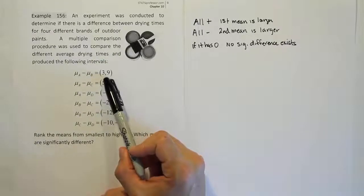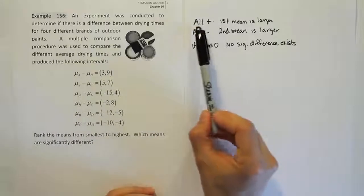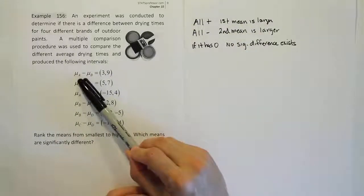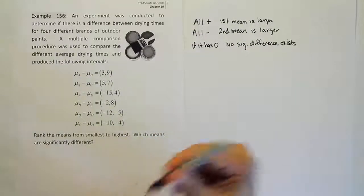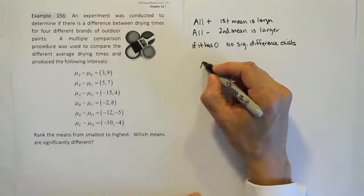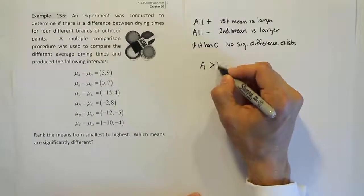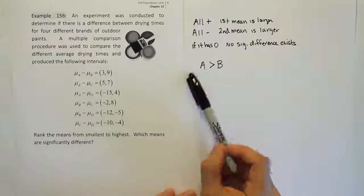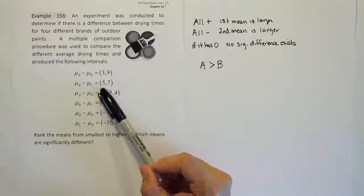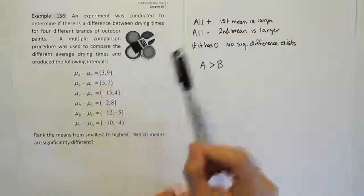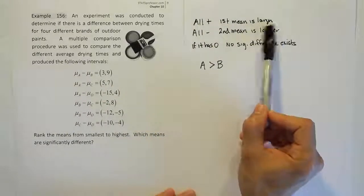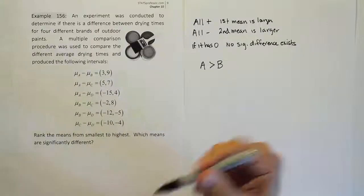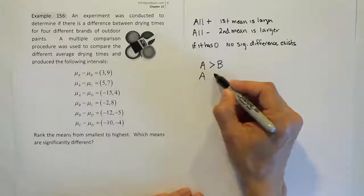Looking at the first interval, I see that it's all positive. If it's all positive, the first mean is larger. The first mean in our subtraction is mean for A, so from that first interval I can say that A is greater than B. Coming down to the second interval, I see again it's all positive, so the first mean is larger. The first mean in this subtraction is A again, because it's A compared to C. So A is greater than C.